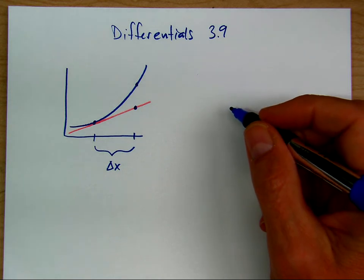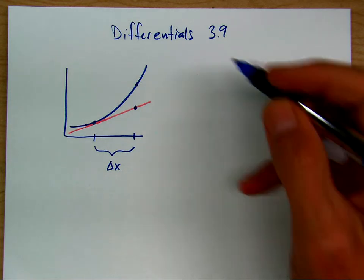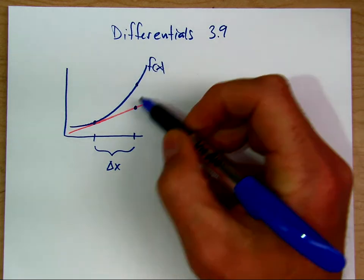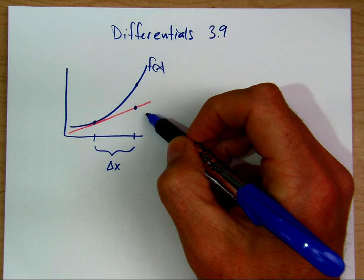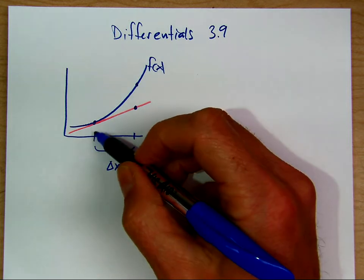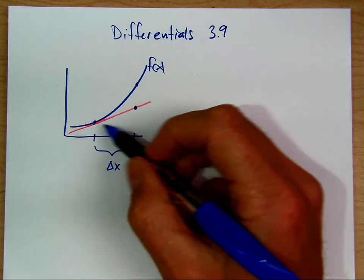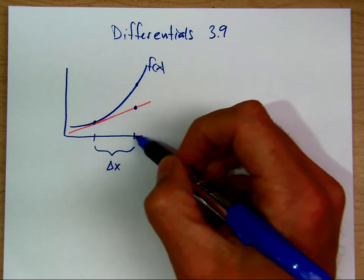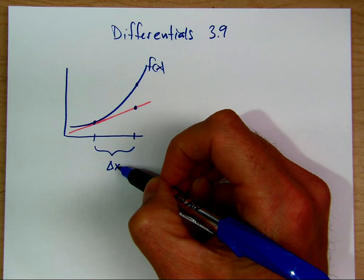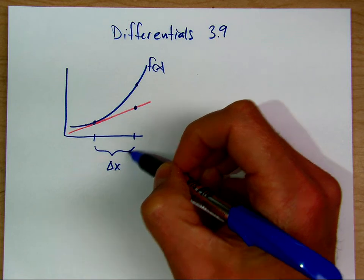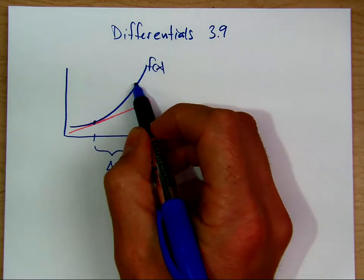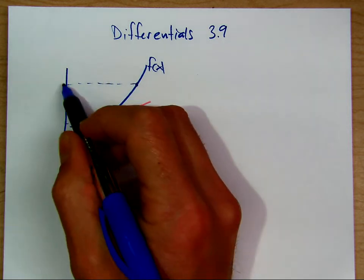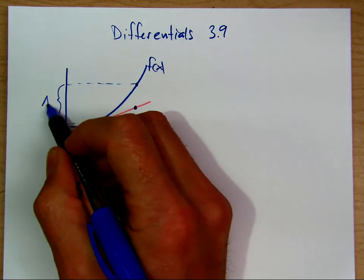Let's see how those show up in a graph. If we have a function, which is the blue line, and then a tangent line, if we go away from the point of tangency, we would call this change in x delta x.